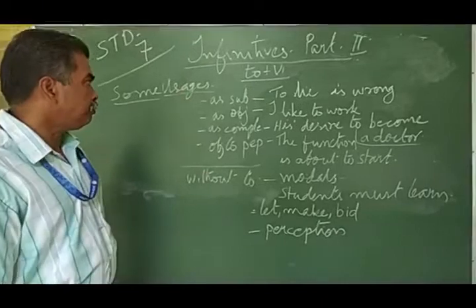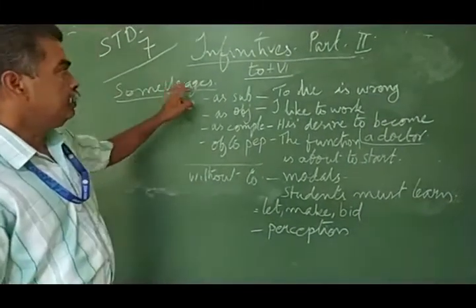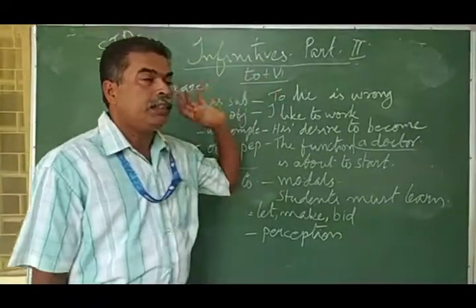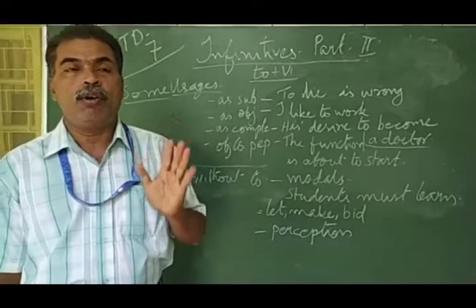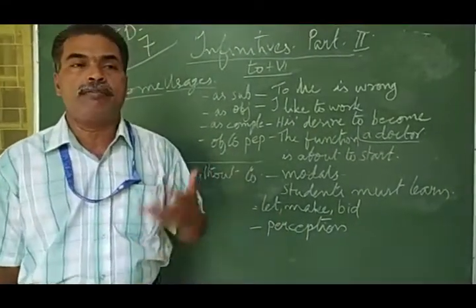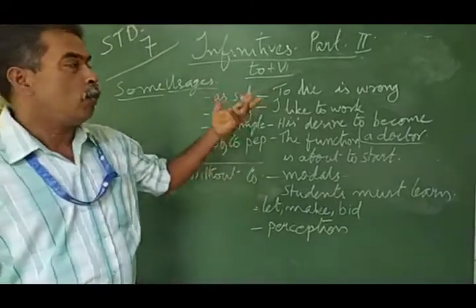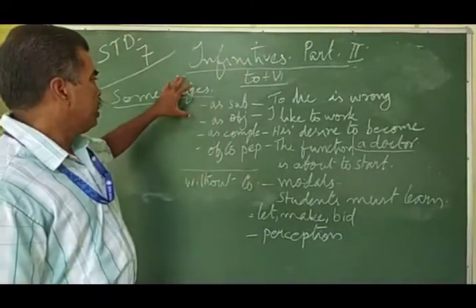So let's get into our portion. Infinitives, as I told you yesterday, are made with to and v1 or root form of a verb. Yesterday I told you: to come, to sit, to laugh, to eat, to go. This is what is the form of infinitive.